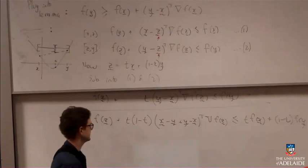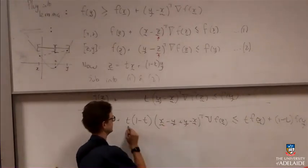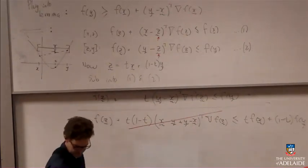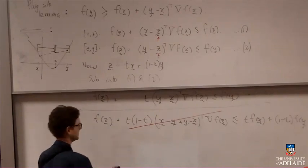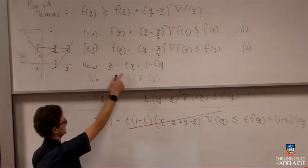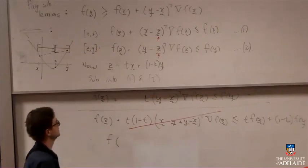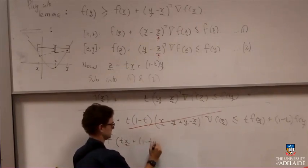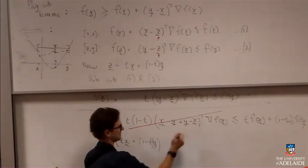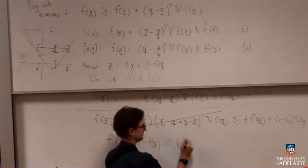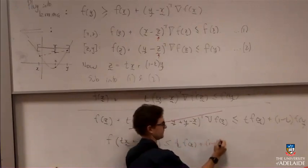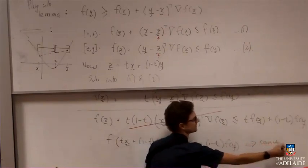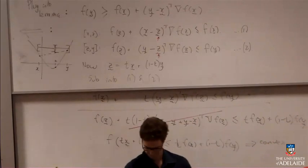So what disappears? So some stuff cancels out. The beautiful thing is that that term is equal to 0, which means that whole thing is equal to 0. And so actually, if I write out what is left, and in fact, I'll replace this z with the definition of z here, I end up with f of t x plus 1 minus t y plus nothing is less than or equal to t f of x. And that is exactly the definition of a convex function. So we've done it.